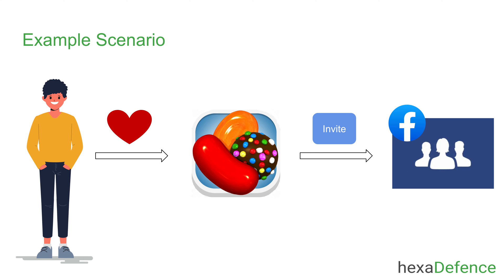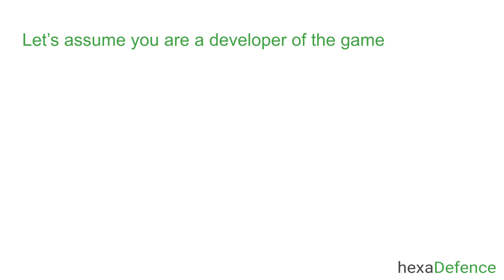Now you can assume that this is the use case we need to implement. Let's switch our perspective from Mike to the developer of this application. Now you can assume you are a developer of this application, Candy Crush. You need to come up with a solution to let the user invite his Facebook friends.